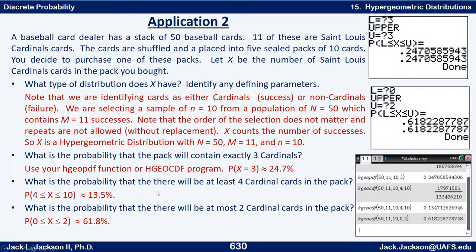What's the probability there will be at least 4 Cardinals in the pack? That's from 4 on up — in this case up to 10 because there are only 10 cards in the pack. So we want P(4 ≤ X ≤ 10). Run the program again with 50, 11, 10, lower=4, upper=10. That's about 13.5 percent. For at most 2, that's from 0 up to 2. Running the program with lower=0, upper=2 gives approximately 0.618, or about 61.8 percent.